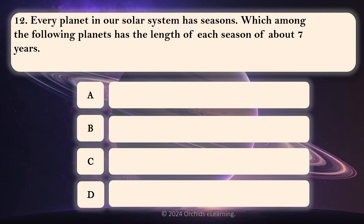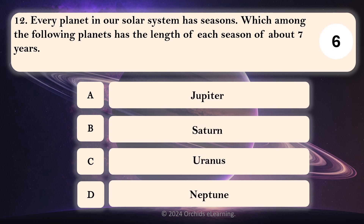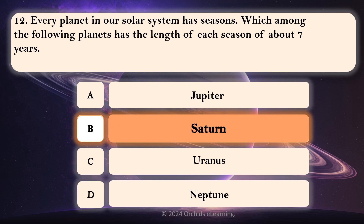Every planet in our solar system has seasons. Which among the following planets has the length of each season of about seven years? B. Saturn.